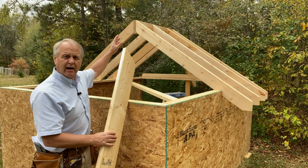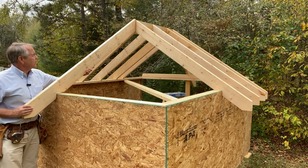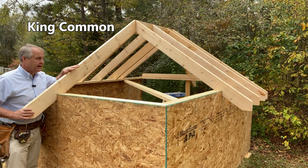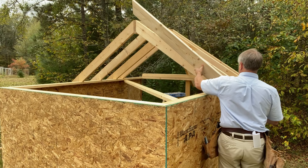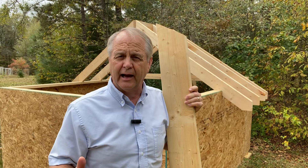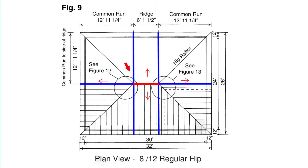On this model we've got common rafters on each side of the ridge, and the king common set right at the end of the ridge — it's interchangeable with all the other commons. Let's take a look at the plan view drawing. A regular hip is a hip roof that has the same pitch all the way around, as shown by these four red arrows indicating an 8/12 pitch on all sides.